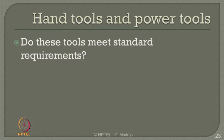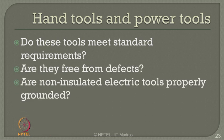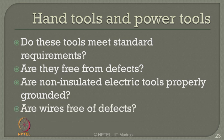People generally drop hand tools and power tools in case of emergency. Let us check whether these tools meet standard requirements. Are they free from defects? Are non-insulated electric tools properly grounded? This is very important because it can cause short circuits leading to serious accidents in case of power failure. Are wires free of defects? Wires of longer length subject to high wear and tear may have exposed insulation — check that they are free from defects.